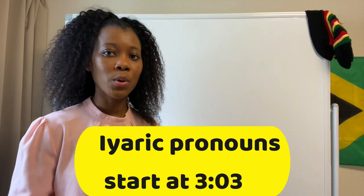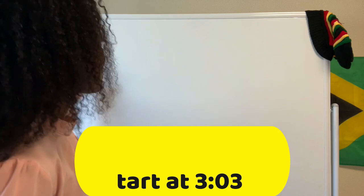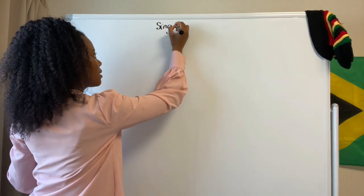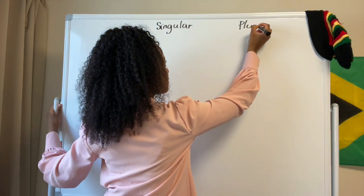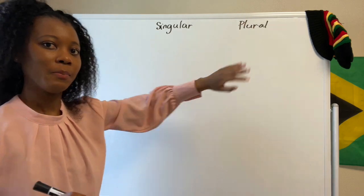So yes, Rastafarians have their own pronouns. What does this look like? I'm going to start from the English base and then move into the Iyaric, because most people watching this will understand some English. The English personal pronouns look like this — we have the persons on one side and then we have singular and plural. Singular means one thing, plural means more than one thing.